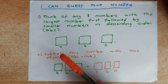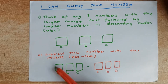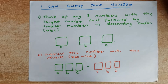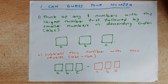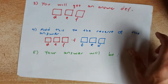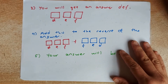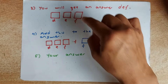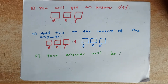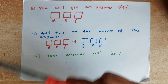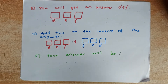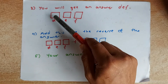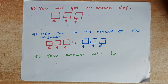I repeat. You take the number A, B, C — for example, 741 — and you minus the reverse, so you minus 147. You will get a 3-digit answer, and that 3-digit answer will be in the form DEF. If you only have a 2-digit number, put D as a 0. So if your answer is 65, then your answer will be 065.